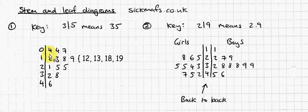Now, it could have meant 1.2, depends on the key, but the key I wrote here, I said 3 line 5, this line here is this line here, 3 line 5 means 35. So according to this key, that's how you should interpret this stem and leaf diagram.